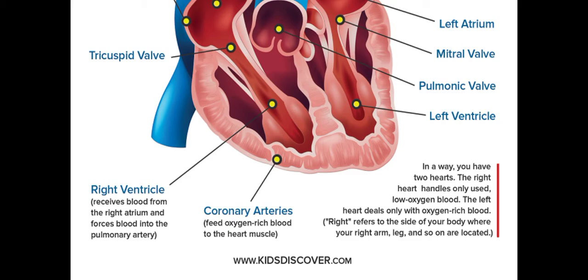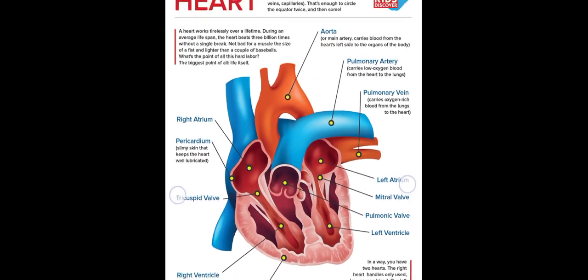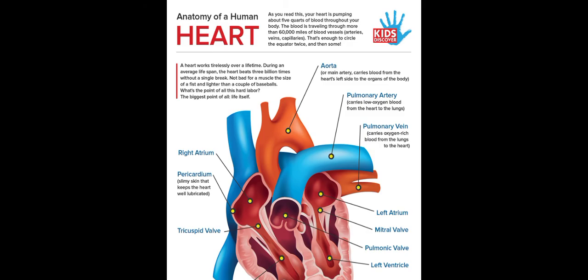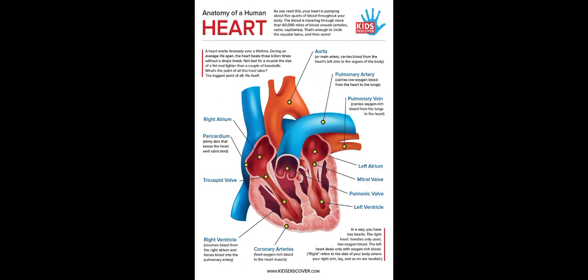In a way, you have two hearts. The right heart handles only used, low-oxygen blood, while the left heart deals only with oxygen-rich blood. 'Right' refers to the side of your body where your right arm is located, and so on. So the primary function of the heart is to pump blood throughout the body — you need a healthy, well-working heart to survive. Thank you for watching.